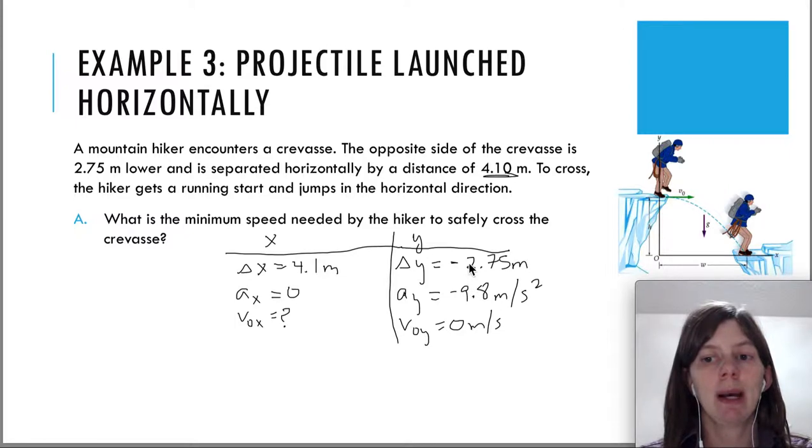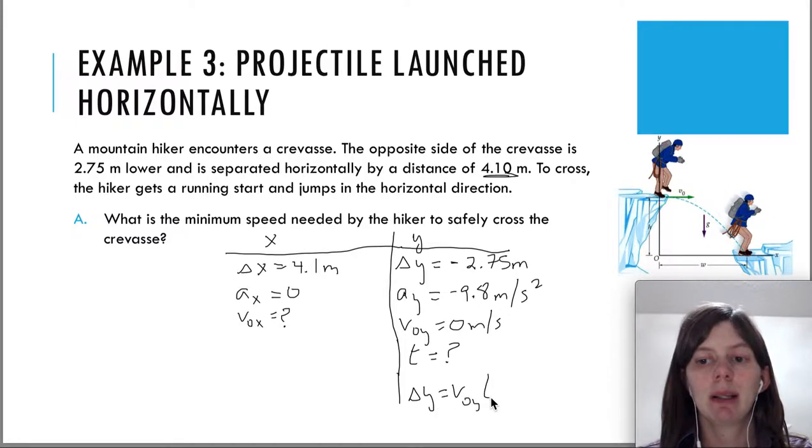So you see, we now have those two out of the three. We now have three total variables. We can solve for the unknown. Now the unknown is over here in the x-direction. But we talked about the fact that we could solve for time. If we solve for time, then we can use it for the x-direction because time is common to both directions. So we're going to use the kinematic equation delta y equals v-0-y t plus one half ay t squared. Cross out the first term because the initial velocity is 0.